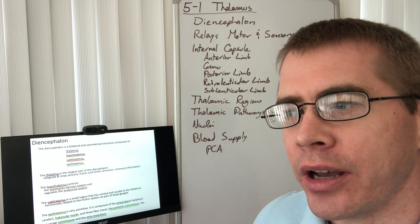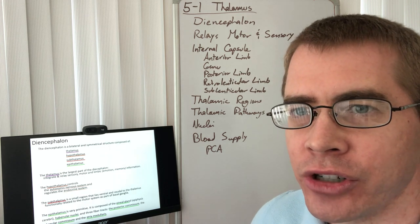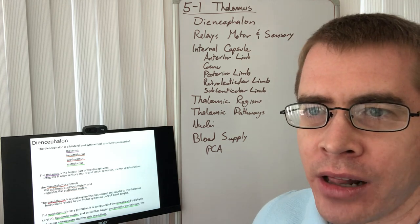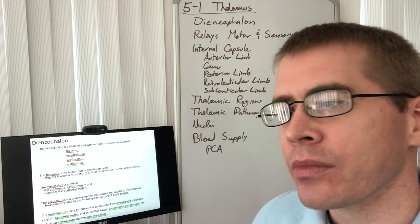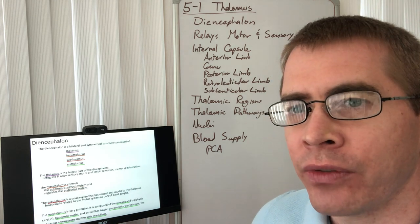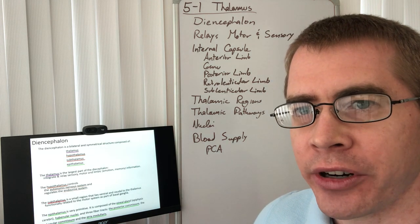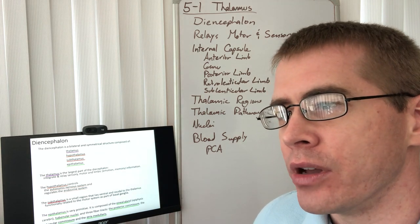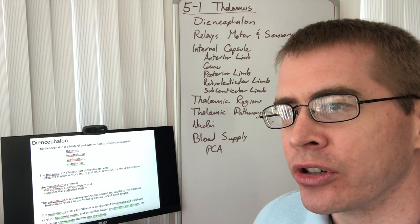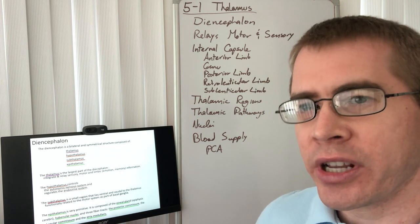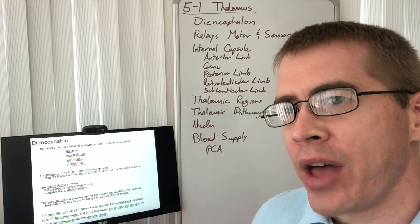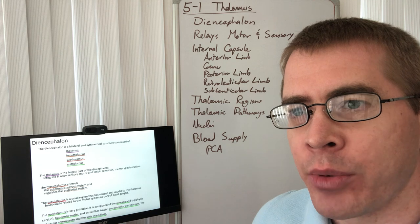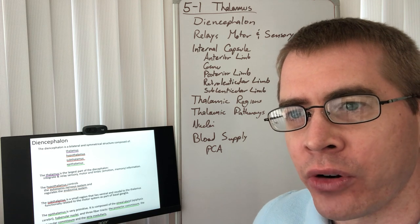The thalamus is the relay station for the motor and sensory processes of the brain. The hypothalamus, also part of the diencephalon, is mainly concerned with controlling autonomic functions and controlling the pituitary gland, which releases hormones into the bloodstream. If you think of the cortex as the location of the upper motor neurons for the corticospinal tract, then the hypothalamus is the location of the upper motor neurons for the viscero-motor functions.